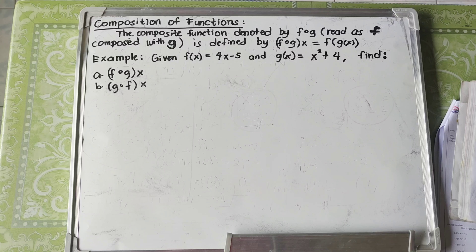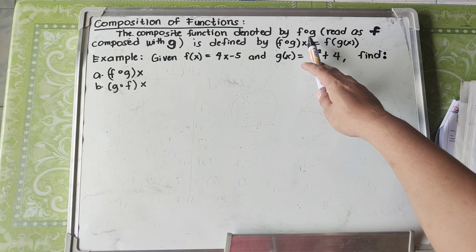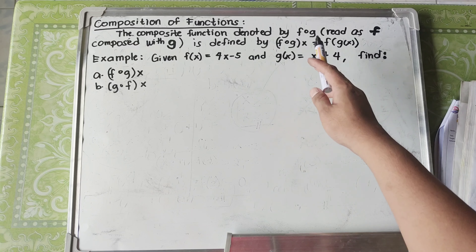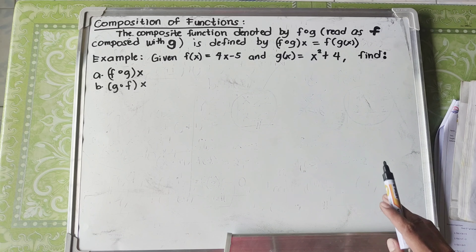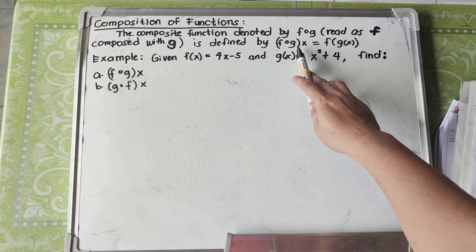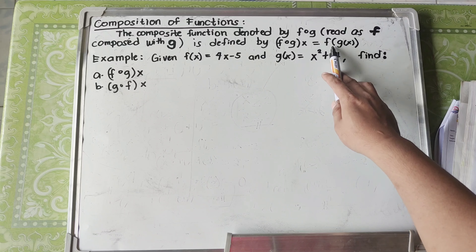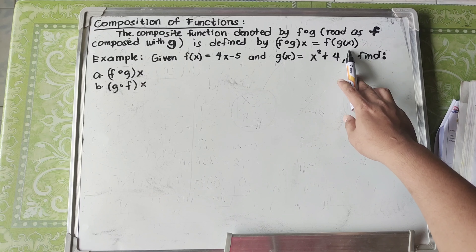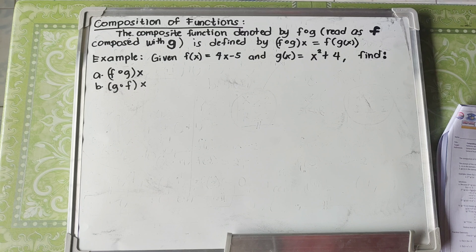The composite function, denoted by F composed with G, is read as F composed with G, and is defined by F composed with G as a function of X. If you can see these two forms — F composed with G, F composed with G — they are just the same.